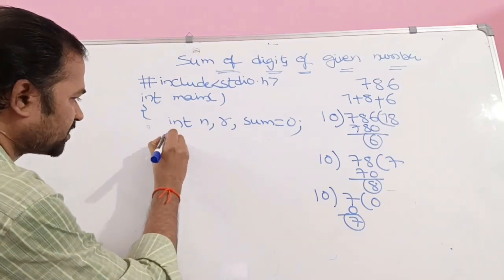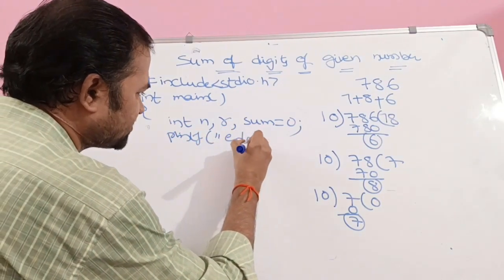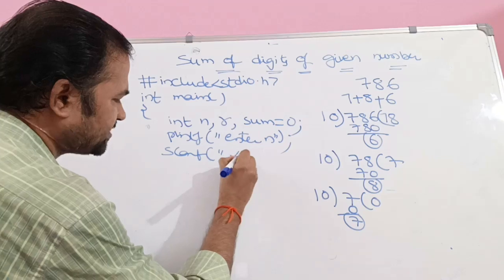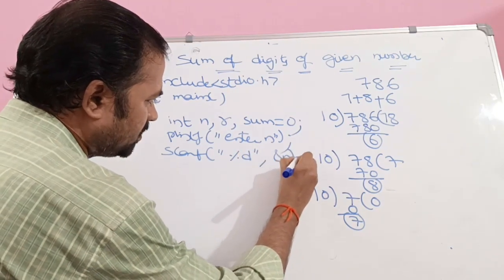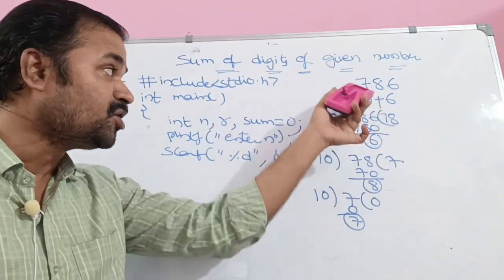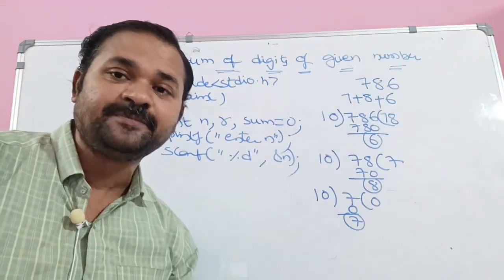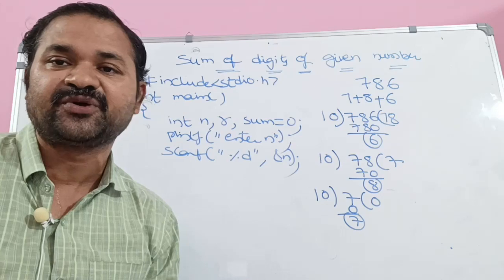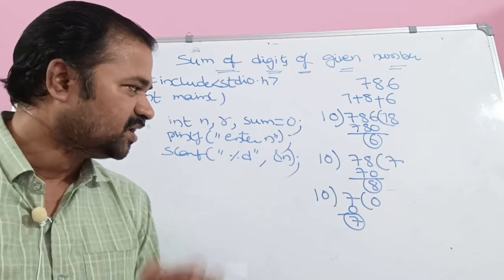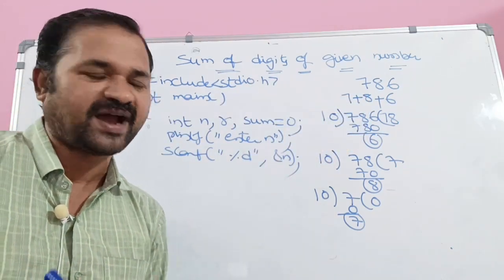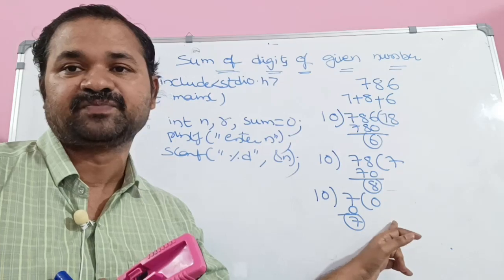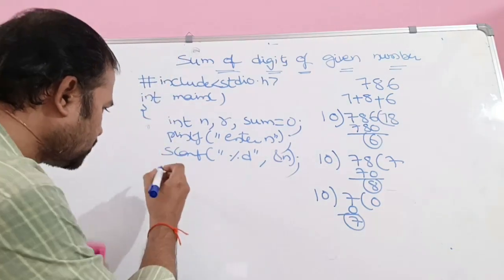Then we read n using printf to prompt 'Enter n' and scanf with format specifier %d and address &n. Let the value of n be 786. Now we write a while loop because we need to repeat the operation. Since the number has three digits, we repeat three times. If there are 10 digits, we repeat 10 times. So we use a while loop. We repeat the procedure as long as n is greater than zero; when it reaches zero we quit the process.